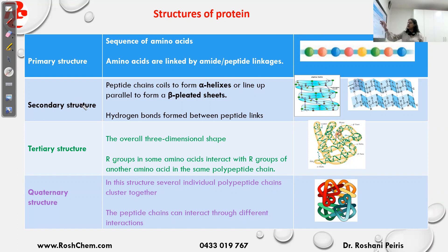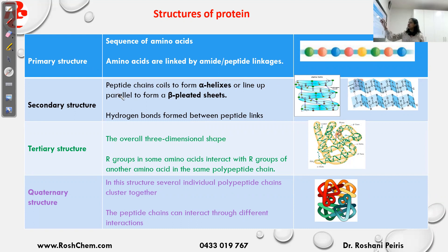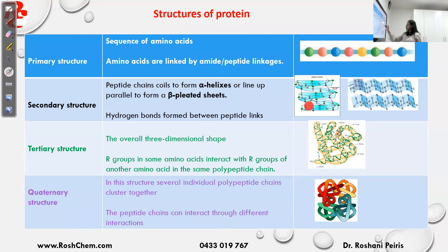In the secondary structure, hydrogen bonds form between the peptide links. So if you take the primary structure, these peptide links are interacting via hydrogen bonding. Because of that, the polypeptide chain will coil to make alpha helices, or it will line up parallel to form beta pleated sheets. What you have to remember about secondary structure: it arises due to hydrogen bond formation between peptide links, giving alpha helices or beta pleated sheets.